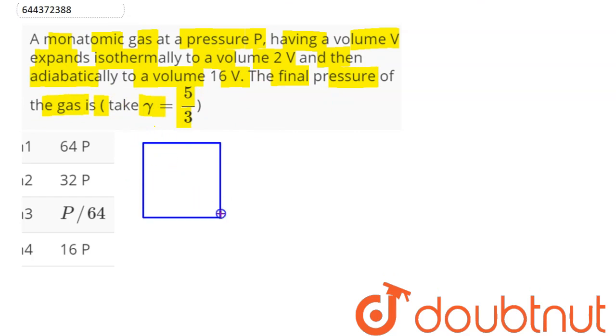So here we have a monatomic gas initially at pressure P, volume V, then expands isothermally to volume 2V and then adiabatically to volume 16V. We need to find final pressure.